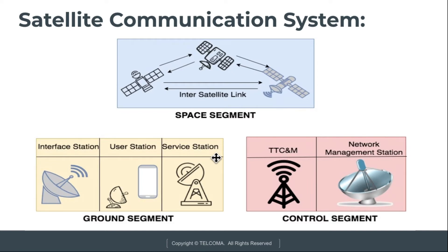The interface station, also known as the gateway, interconnects the space segment to a terrestrial network. The service station collects or distributes information to and from user stations via the space segment using a hub or feeder station. The control segment consists of TTC&M and the network management station.